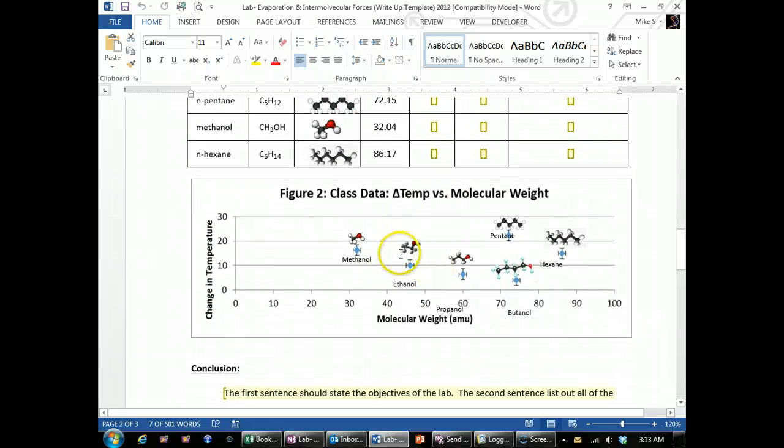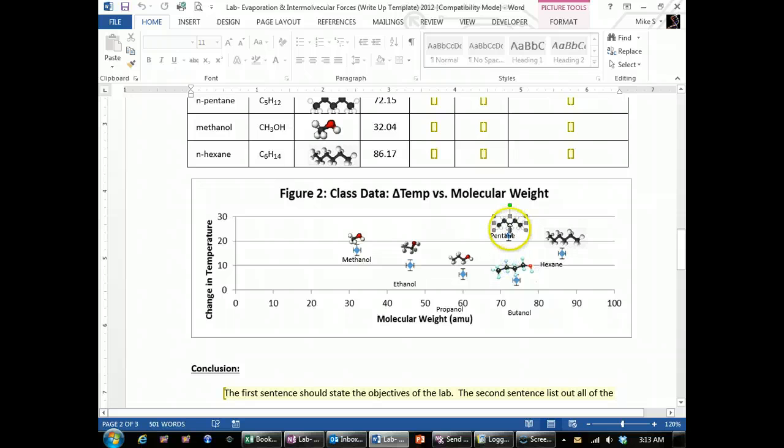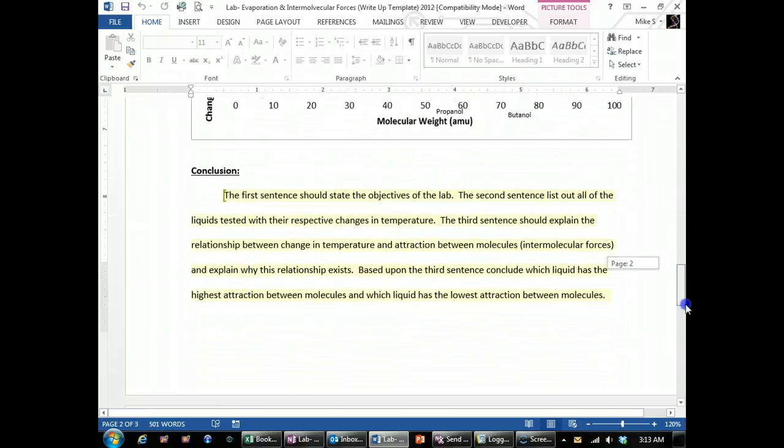What does the student data say? So if you look between the butanol, which is down here and then your pentane, if you look at their change in temperature, the greater change in temperature, pentane had a much greater change in temperature than butanol. So what's that tell you about their relative attraction?